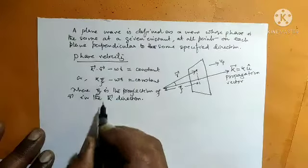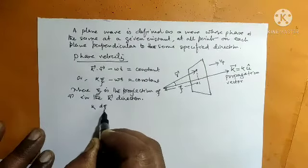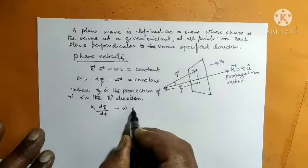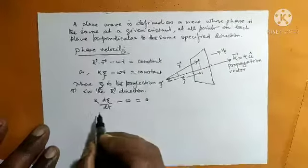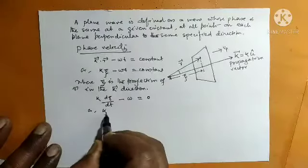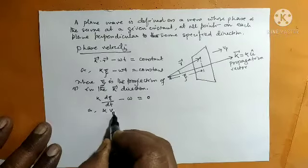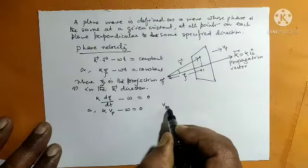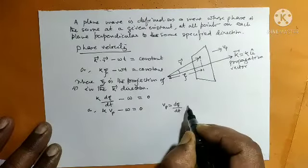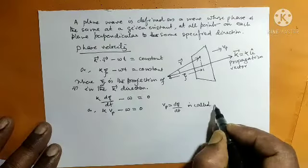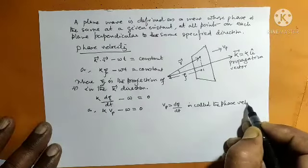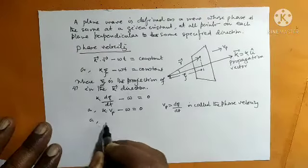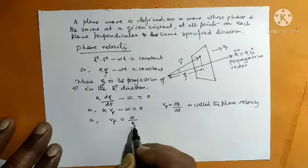Let us differentiate this equation. So K times d(Xi)/dT minus omega times dT/dT equals zero, since the derivative of a constant is zero. So K times d(Xi)/dT equals omega. Here d(Xi)/dT is written as V_P, the phase velocity. So K times V_P minus omega equals zero, giving V_P equals d(Xi)/dT, which is the phase velocity of the wave. Therefore V_P equals omega by K.